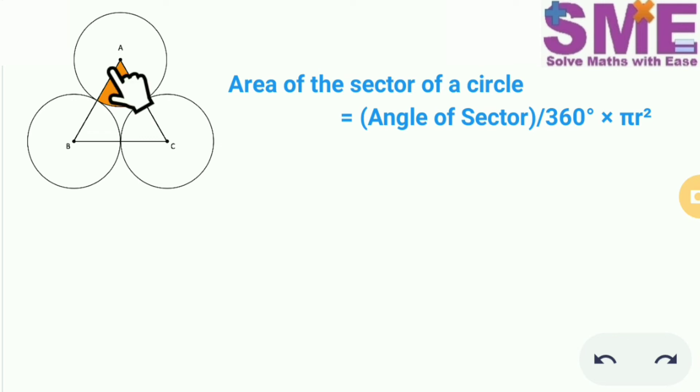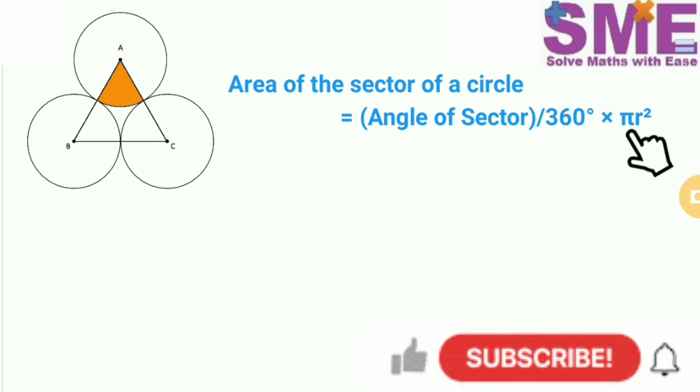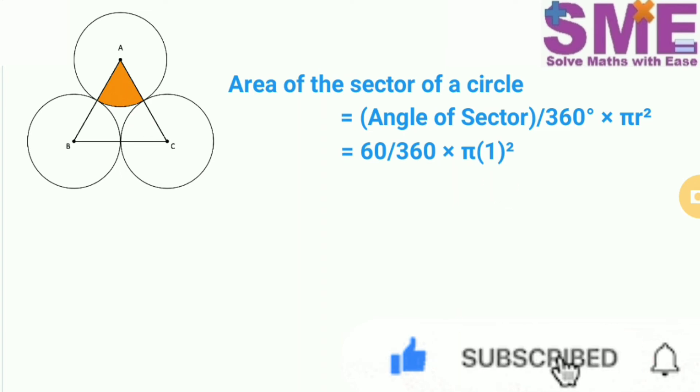The angle of this sector will be equal to 60 degrees because this is an equilateral triangle and each angle of an equilateral triangle is 60 degrees. So substituting the value of this angle of sector 60 degrees and radius as 1, we get 60/360 × π × 1². So the area of this sector is π/6 cm².